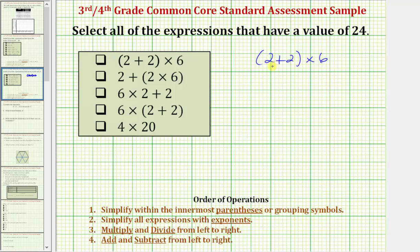So we first want to simplify this addition inside the parenthesis. Two plus two is equal to four. So this expression simplifies to four times six, which is equal to 24. So we do check this first expression.